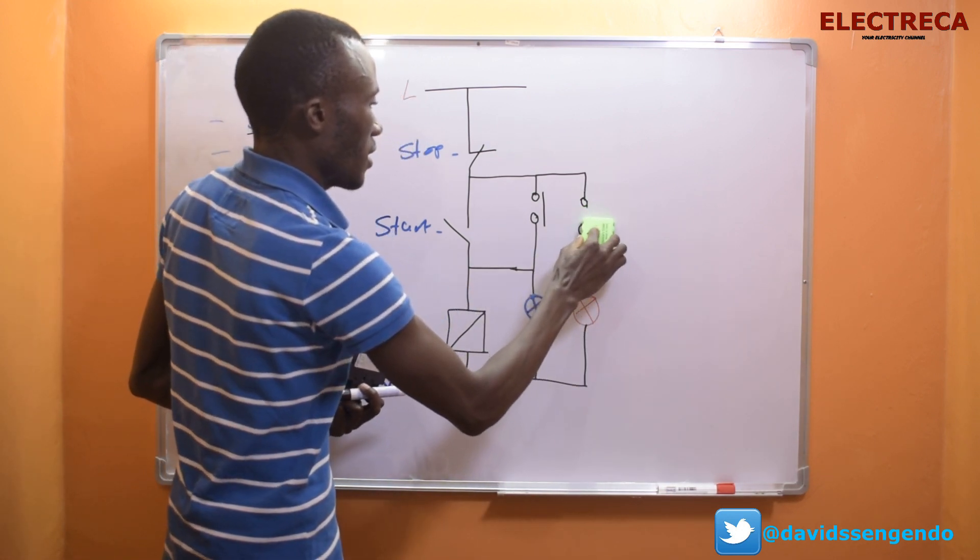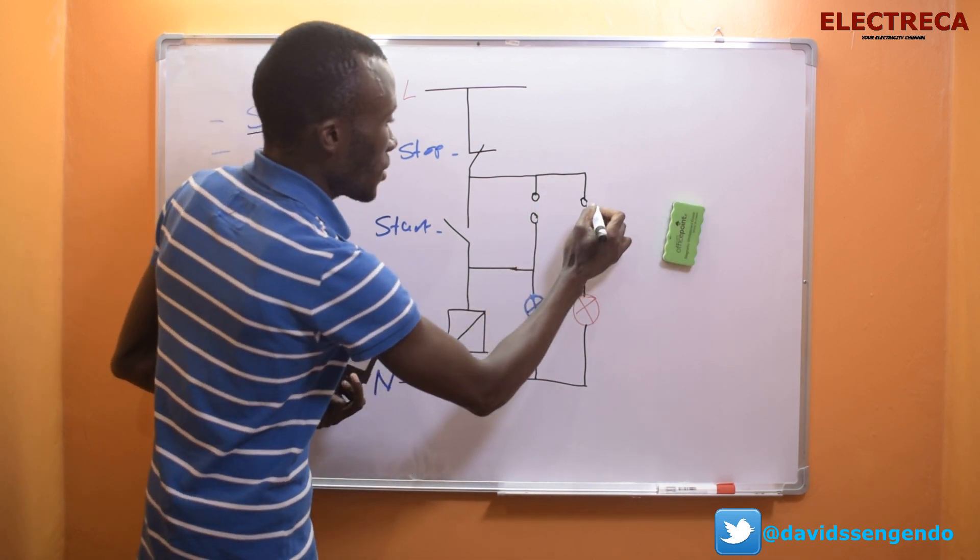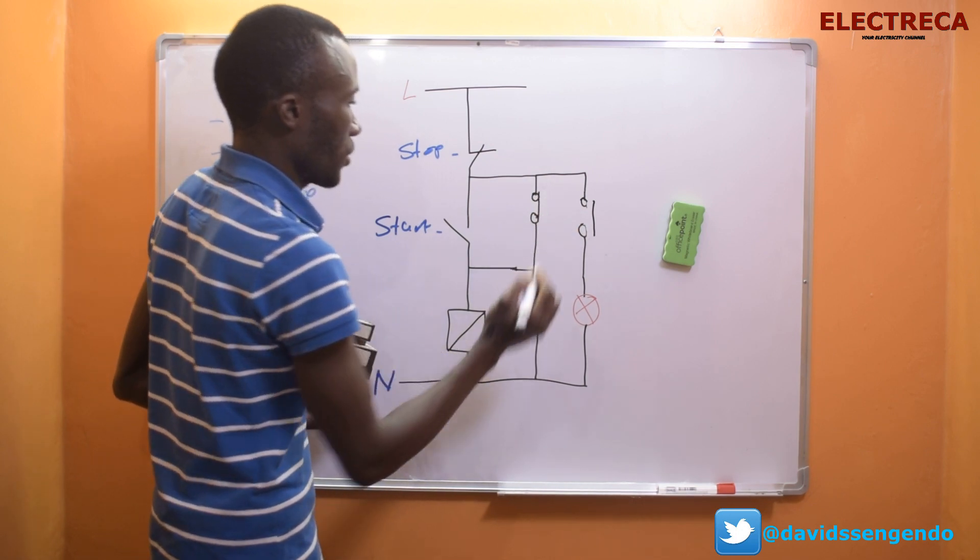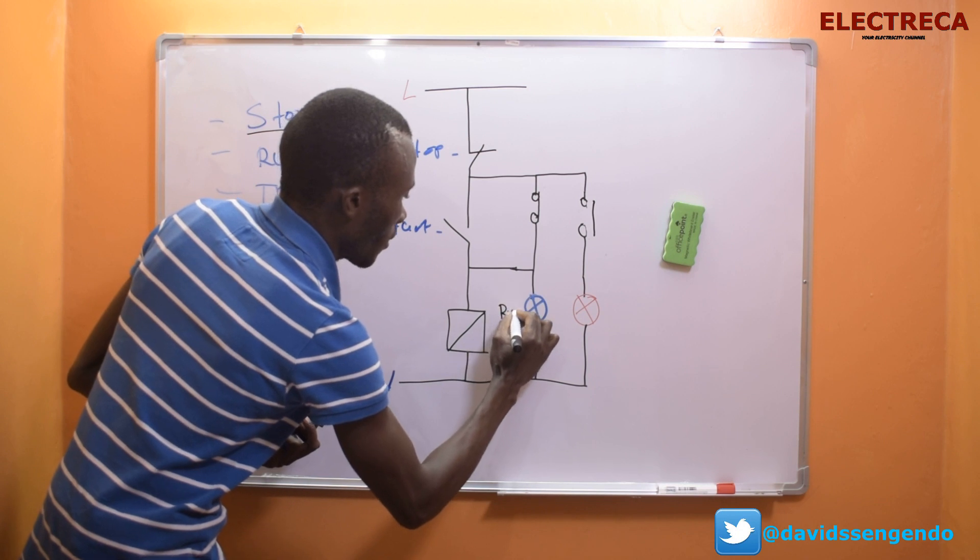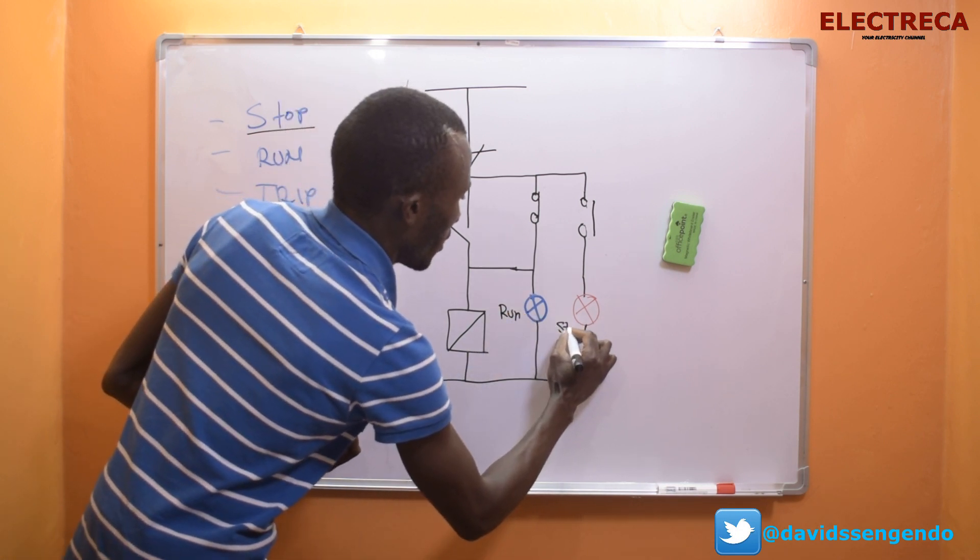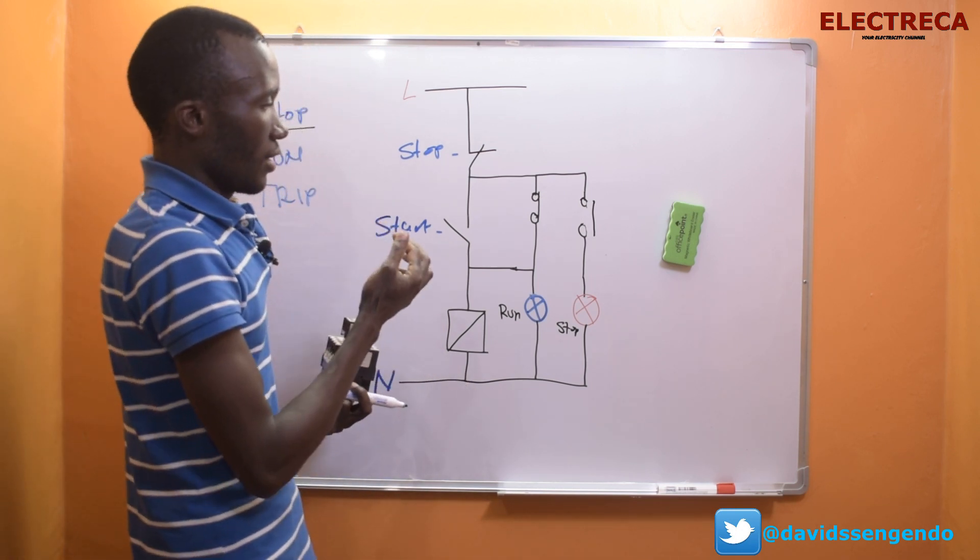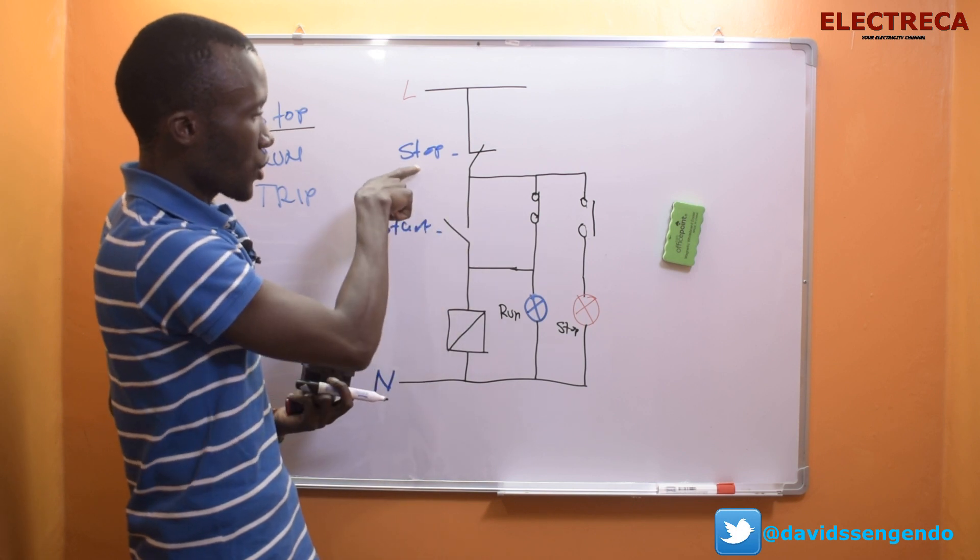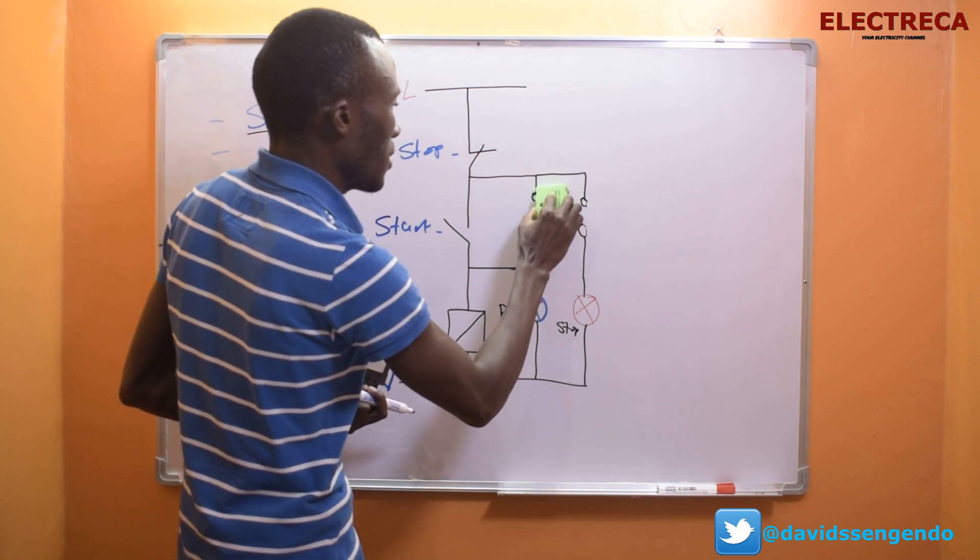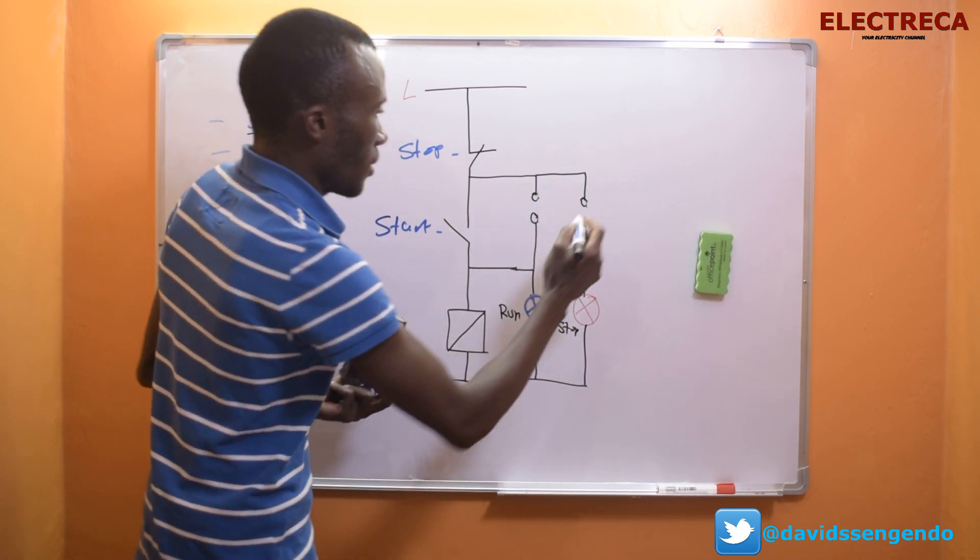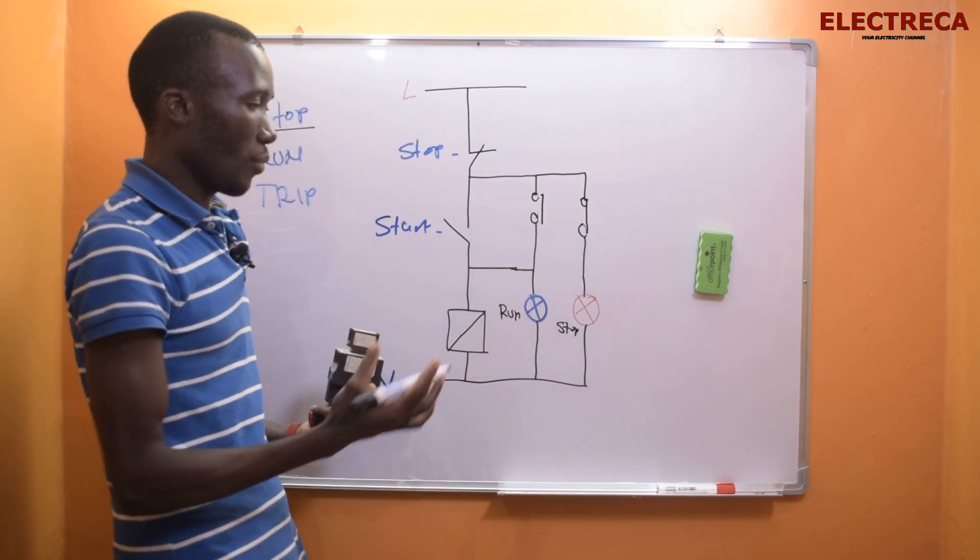In this case, this opens and then this closes, and then now this one will run because now we can show here run and show here stop. If you stop this circuit here, then the reverse is true - this will close and this light will go on, and then this will open.